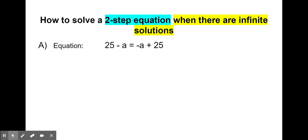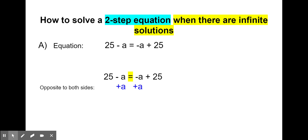Let's approach this the same way that we would for another two-step equation with variable terms on both sides. We're going to start by trying to get the variable terms to the same side. Remember that equal sign means we have to do the opposite to both sides in order to move any terms to the opposite side. We're only focusing on the variable term, that negative a. Since we have negative a, we know that the opposite would be addition, so we're going to add a to both sides.